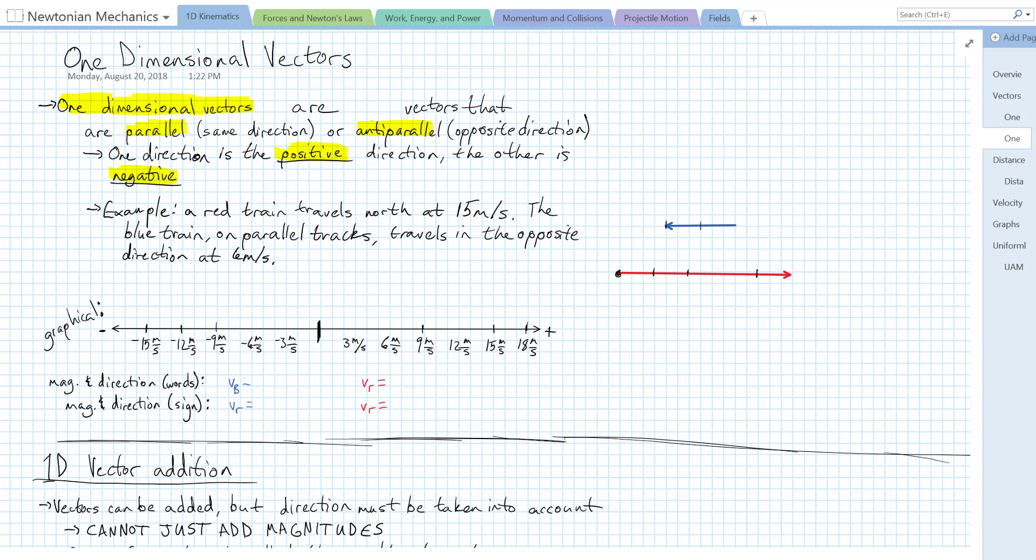So let's look at some vectors in one dimension. Here's our example. We have a red train that travels north at 15 meters per second. The blue train on parallel tracks travels in the opposite direction at 6 meters per second.